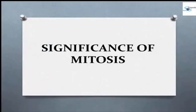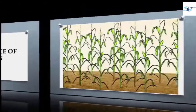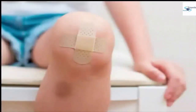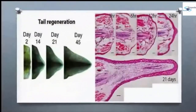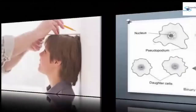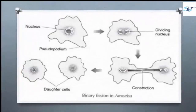Significance of mitosis. Mitosis plays an important role in vegetative growth, wound healing, repair and regeneration. Proper size of an organism is maintained by mitosis. Mitosis helps in asexual reproduction — for example, binary fission in amoeba. The old, decaying and dead cells of the body are replaced due to mitosis.